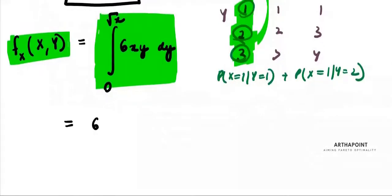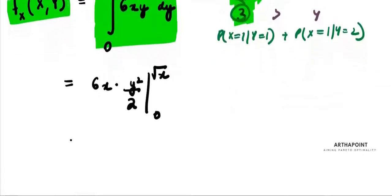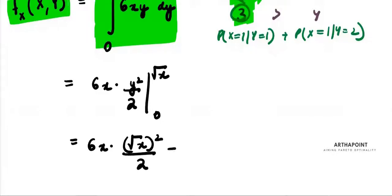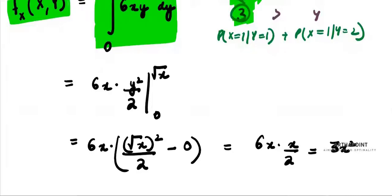So finding the marginal function: integrating 6x times y gives 6x · y²/2, evaluated from 0 to root x. This becomes 6x · (root x)²/2 minus 0, which is 6x · x/2 = 3x². So the marginal PDF f_X(x) = 3x².